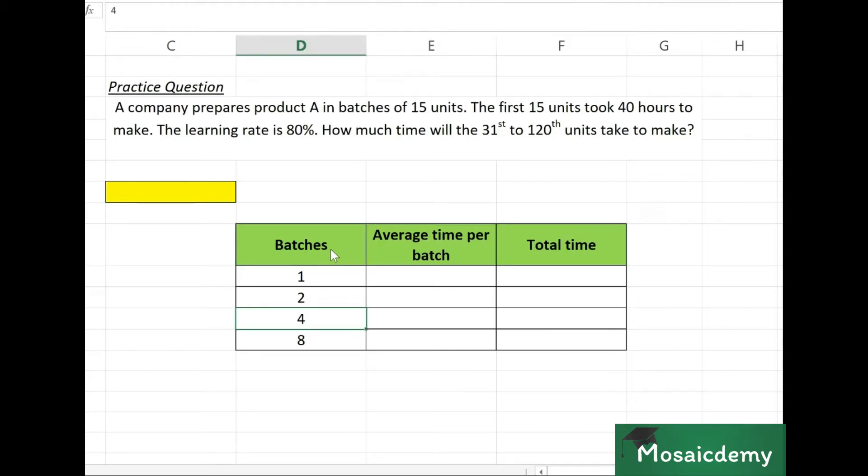Now students tend to get confused because these numbers, 31 and 15, they don't fall in the conventional pattern of 1, 2, 4, 8. So what I always recommend to students is you have the column for batches which you'll use for calculation, but right next to that for your point of reference, make a column for units as well.